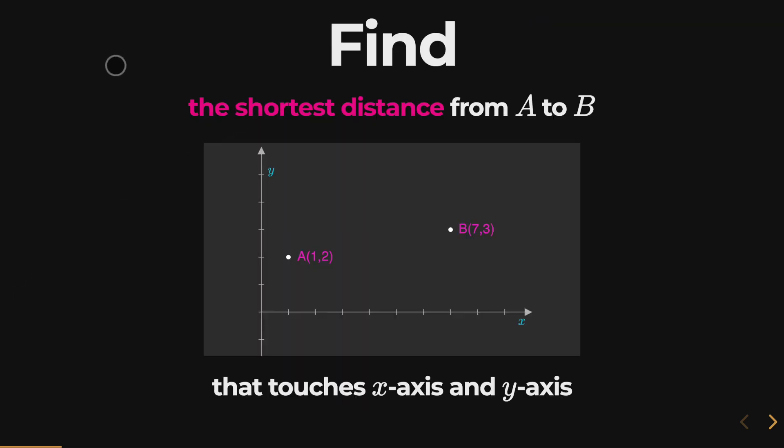So now, we can use all the information we have just acquired to solve our main problem from the start. Find the shortest distance from A to B, but it has to touch both the x and the y axis. So based on earlier, you might think we have to do a reflection to solve this, and yes, we do. However, based on this constraint that it has to touch both axes, we actually have to do two reflections. So let's take a look at the answer now.